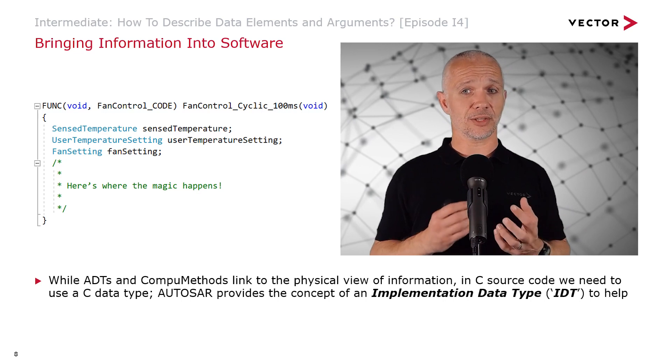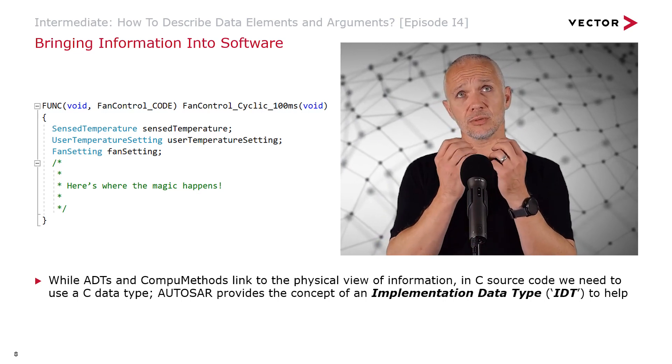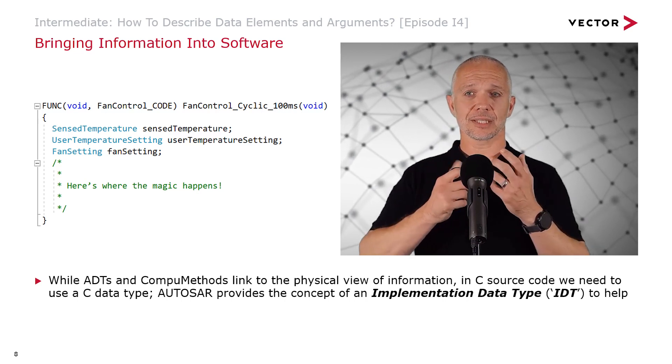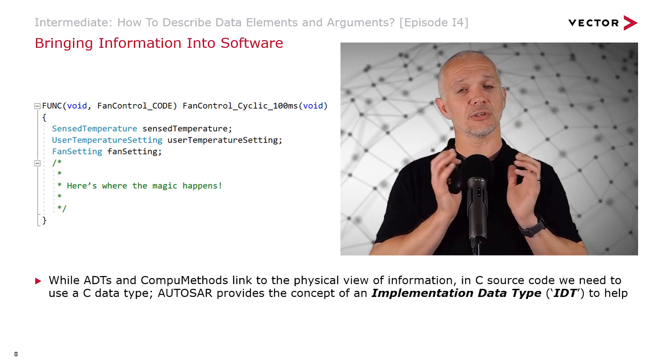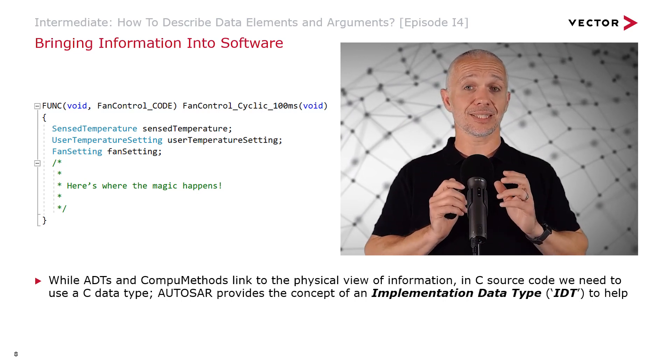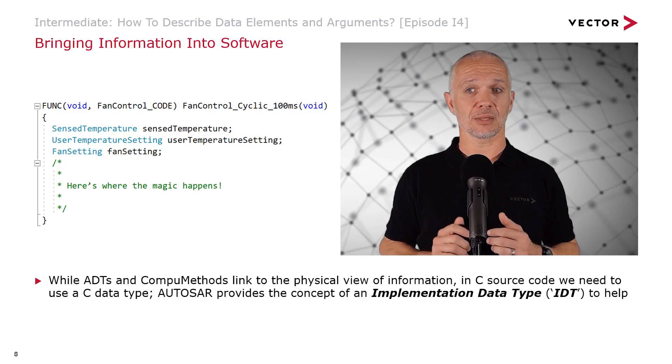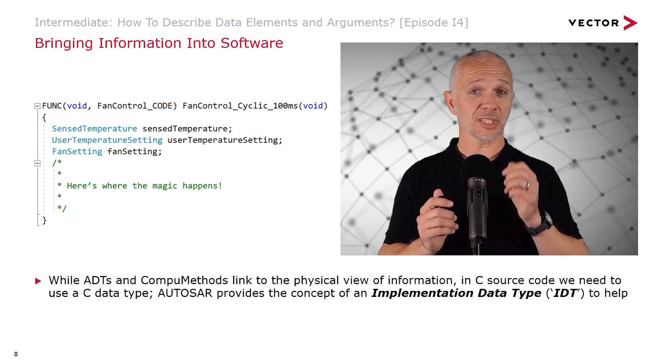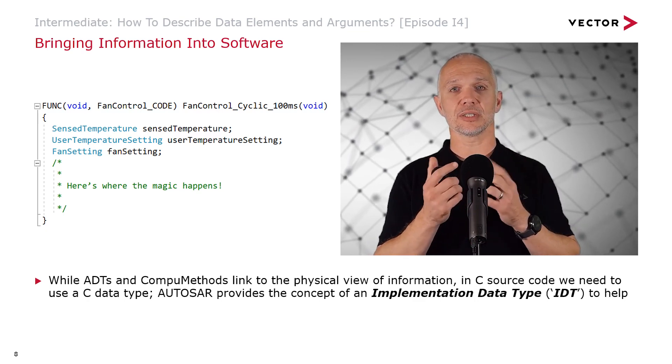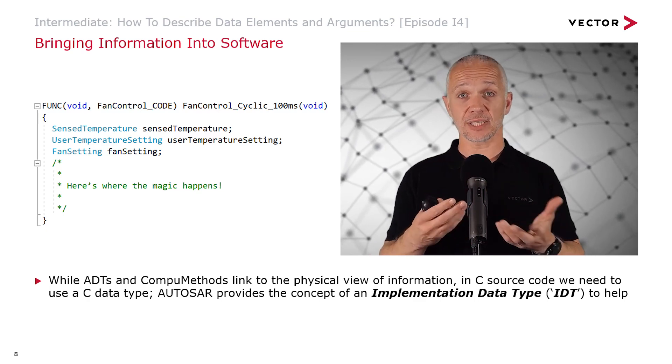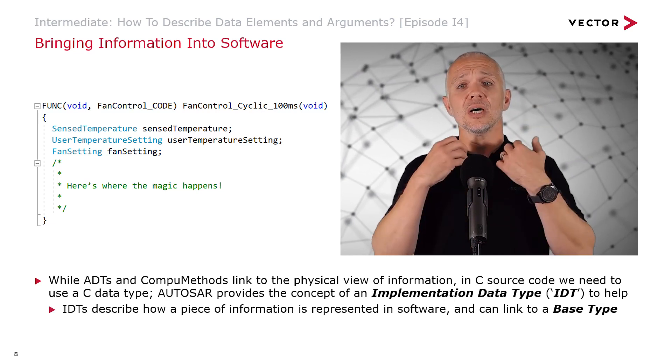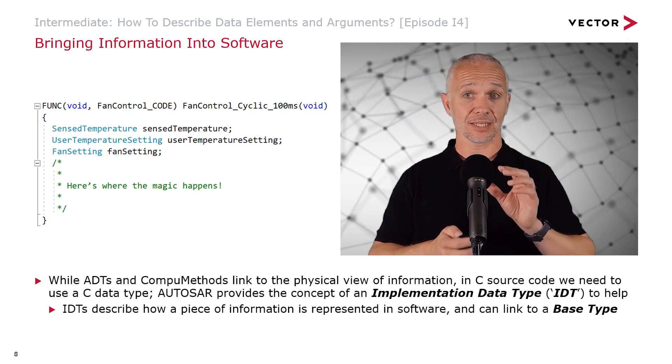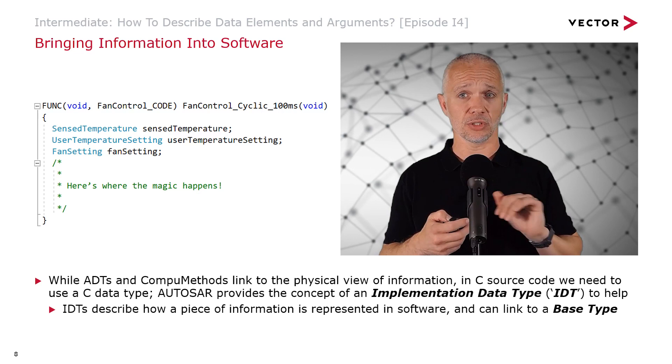To get really into software, we need to get from this kind of physical view of information to something we can really have in software, how it will appear. In C source code, we need to use a C data type. C is the language of AUTOSAR Classic Platform. AUTOSAR provides us the concept of an Implementation Data Type to help us here. Implementation—we implement software, we're writing software, so that's the link there.